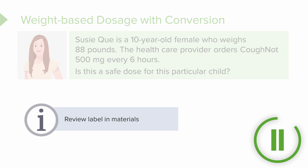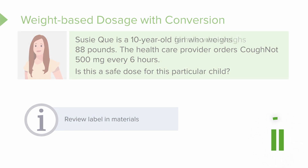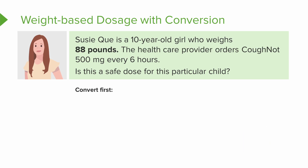You've got the COFNOT label there — go back and take a look at that as we walk through this question. First, we're going to have to convert Susie Q's weight. She weighs 88 pounds, and we're going to divide that by 2.2 because there are 2.2 kilograms in every pound. Susie Q comes out to a perfect 40 kilograms.